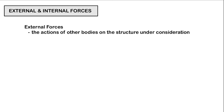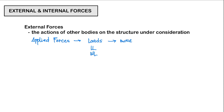For our next topic, we will be discussing external and internal forces acting on our structures. First, external forces — these are the actions of other bodies on the structure under consideration. Under external forces, we have our applied forces, which are typically your loads — live loads, wind loads, and so on. These loads have a tendency to move our structures or to cause translation, and these are typically your known values.